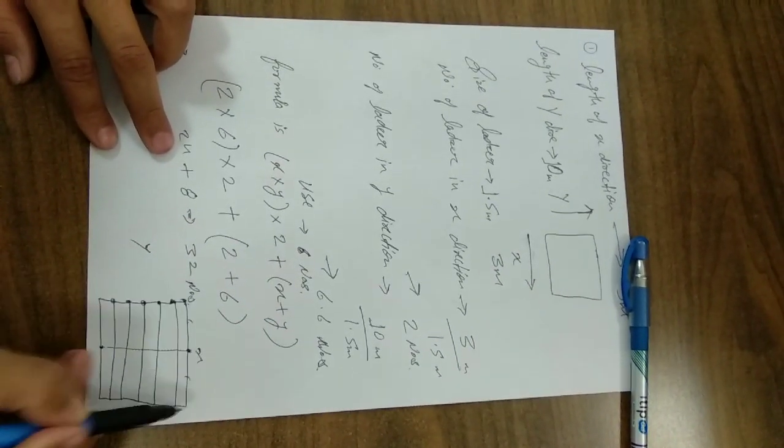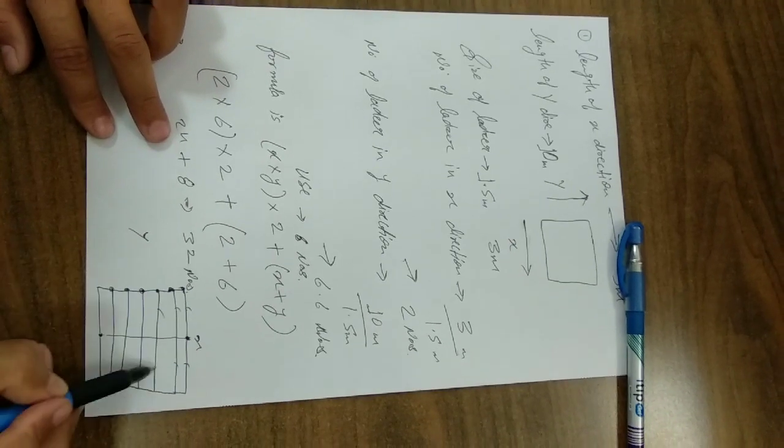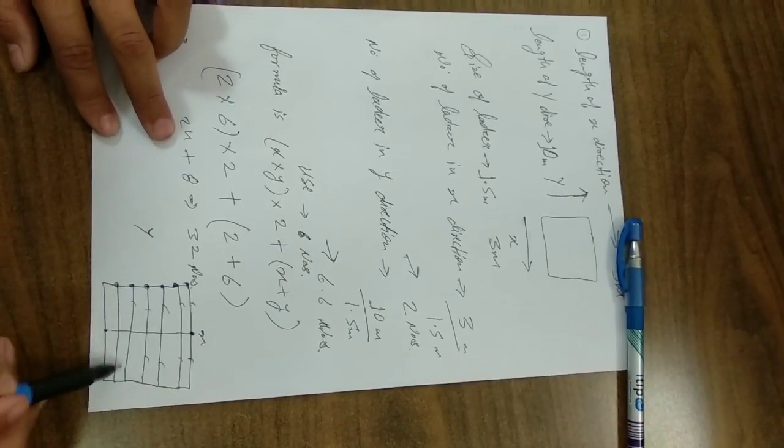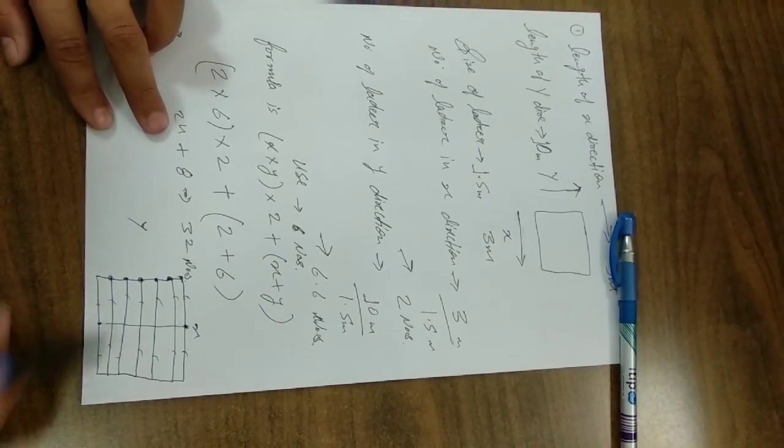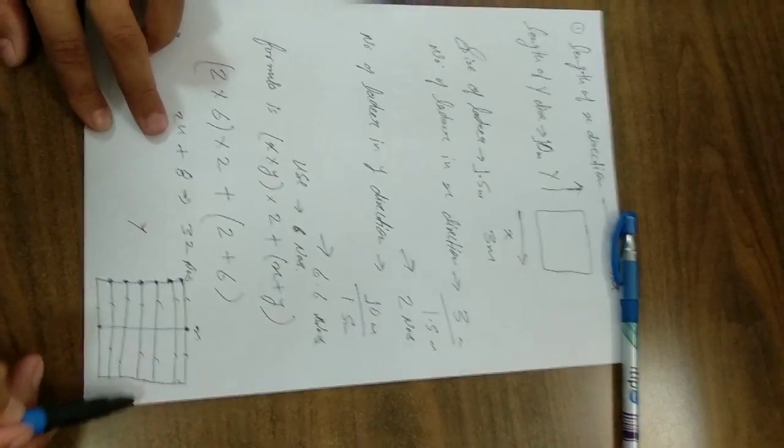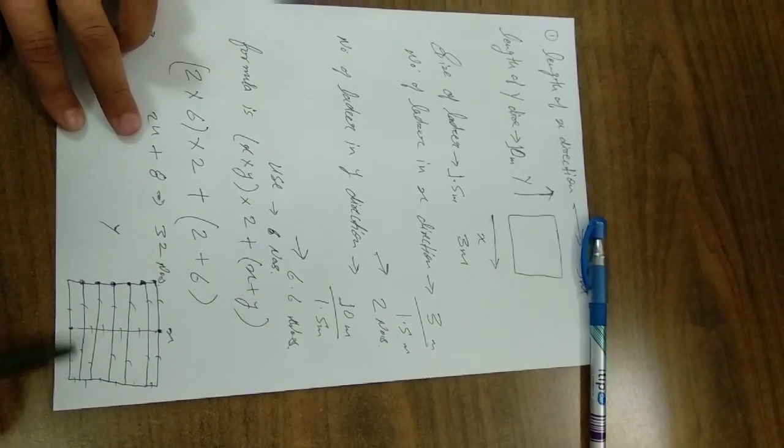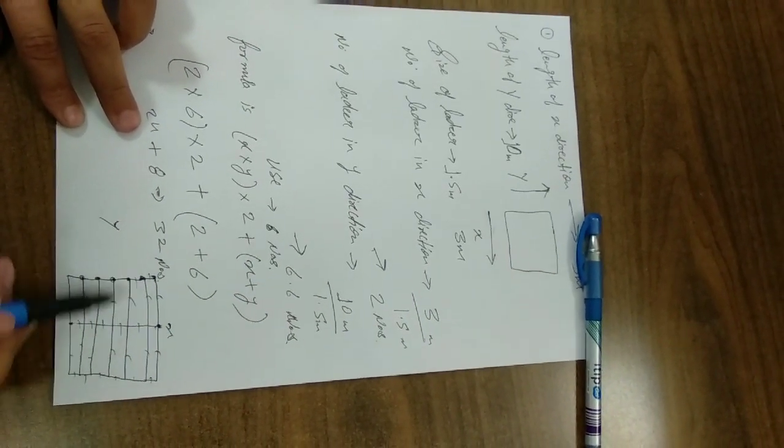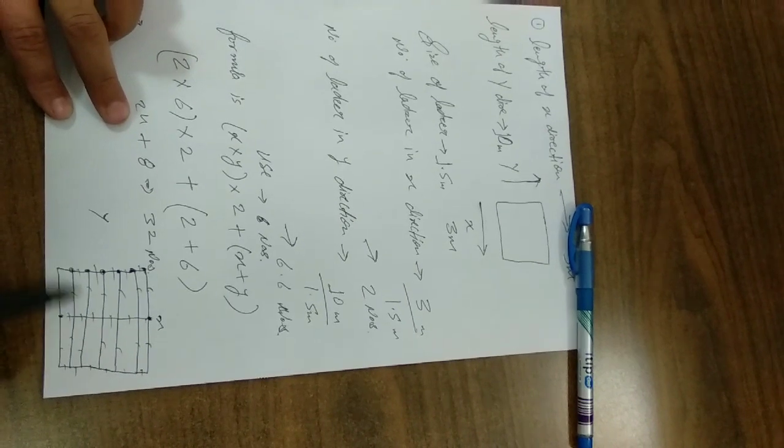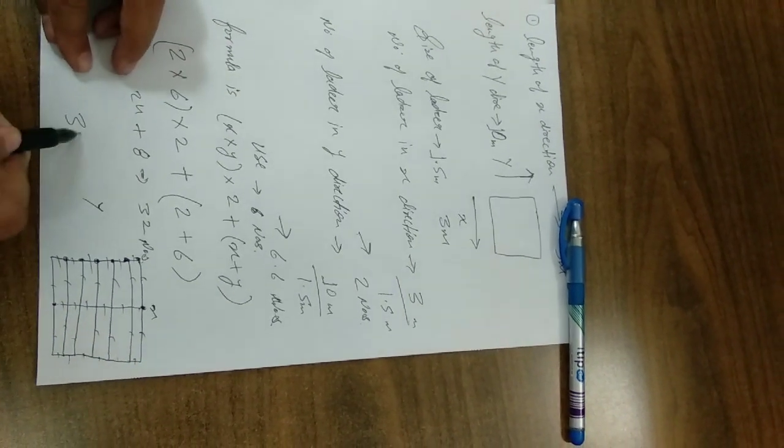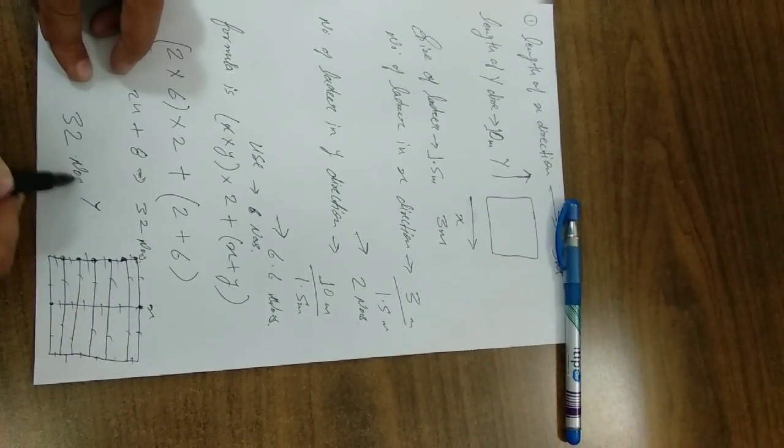Here 1 laser, 2 laser, 3 laser, 4, 5, 6, 7, 8, 9, 10, 11, 12, 13, 14, 15, 16, 17, 18, 19, 20, 21, 22, 23, 24, 25, 26, 27, 28, 29, 30, 31, 32. So number of lasers are 32.